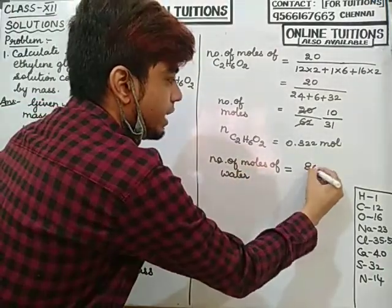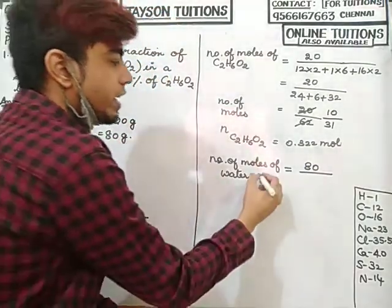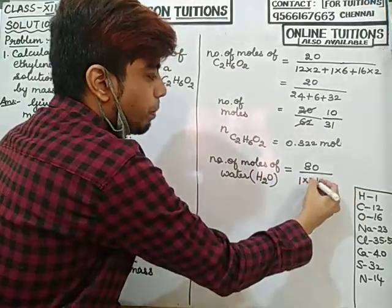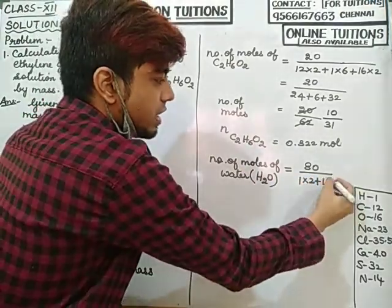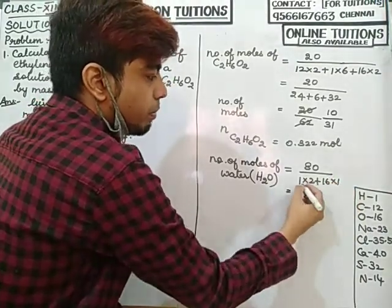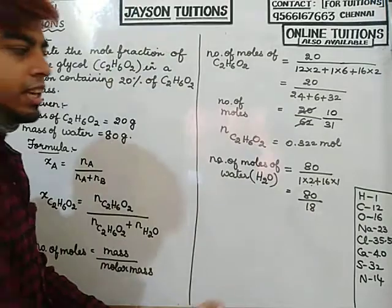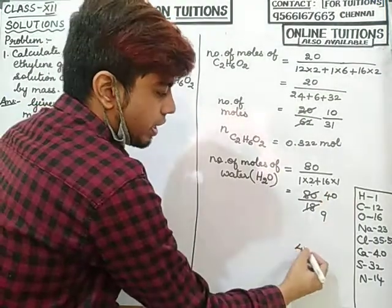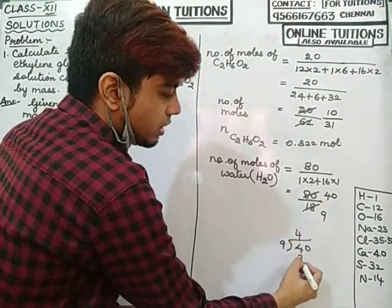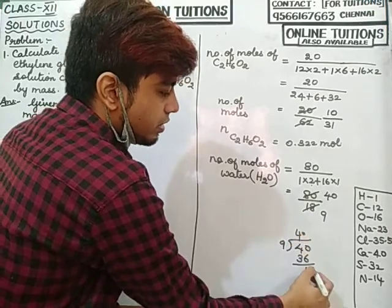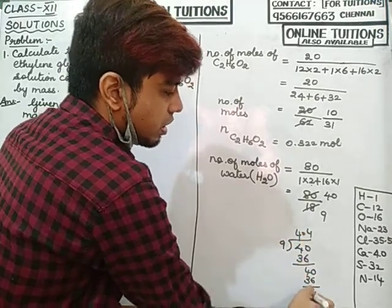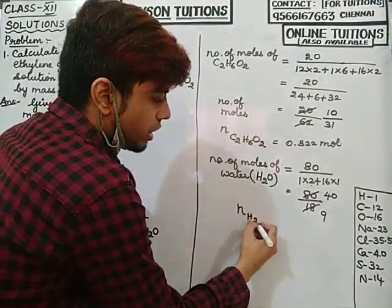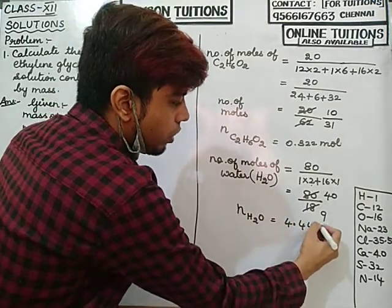Molar mass of water H₂O: hydrogen is 1 × 2, oxygen is 16 × 1, so molar mass = 18. Number of moles of water equals 80 divided by 18. Cancelling, 80/18 = 40/9 = 4.44 moles. So number of moles of water is 4.44 moles.